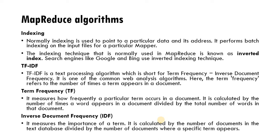Term frequency is calculated as the number of times a word appears in the document divided by the total number of words in the document. For example, if we want to find the term 'okay' in a document and it appears five times, and the total number of words is 50, then the term frequency is 5 divided by 50. Inverse document frequency measures the importance of a term across many documents.